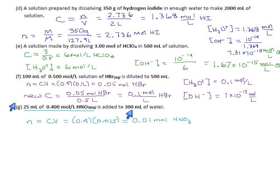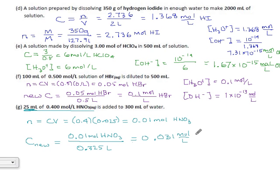Diluted to 500 mils means we made this the new volume. If they say we added 300 mil of water, then your new volume is take 25, add 300 onto it. Our new concentration is the number of moles, 0.01 moles HNO3 divided by 0.325 liters. That's 0.031 moles per liter of HNO3. That's the concentration after we water it down.